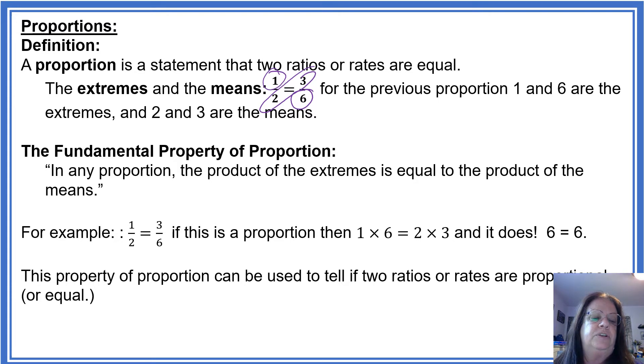The fundamental property of proportions. In any proportion, the product of the extremes is equal to the product of the means. So what that means is you take the 1 times the 6, you would get 6, and the 2 times the 3, again you would get 6. So 6 is equal to 6. This is the property of proportion, and it can be used to tell if two ratios or rates are actually proportional.